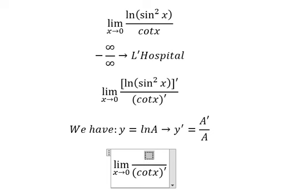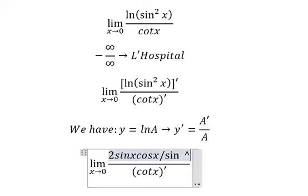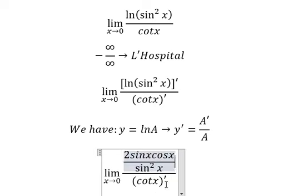And we have 2 sine x cosine x over sine squared x. This one we have negative cosecant squared x.